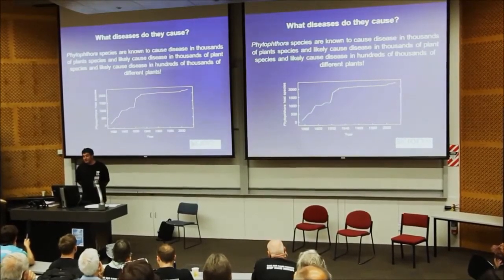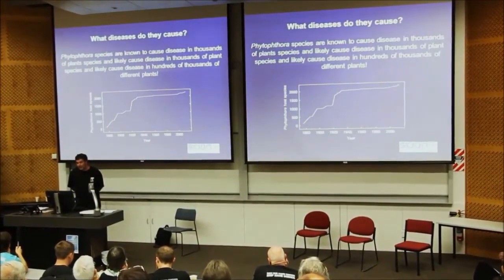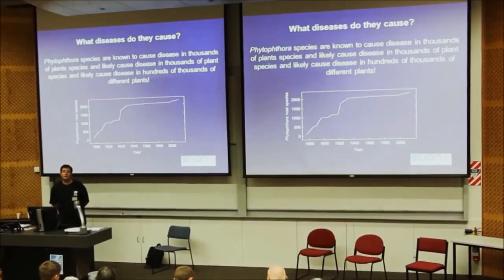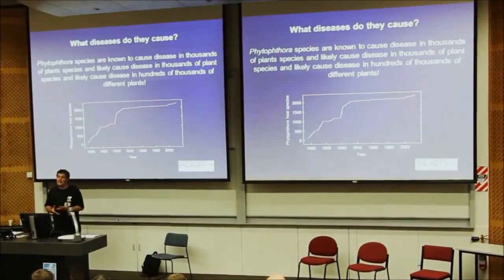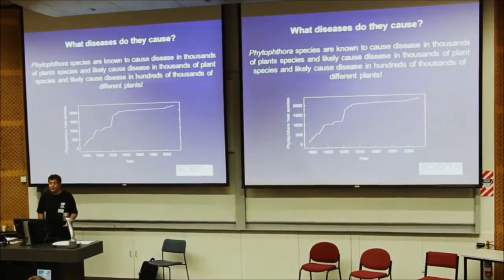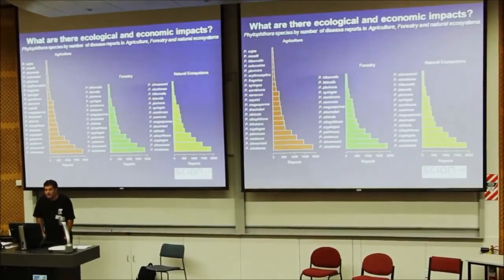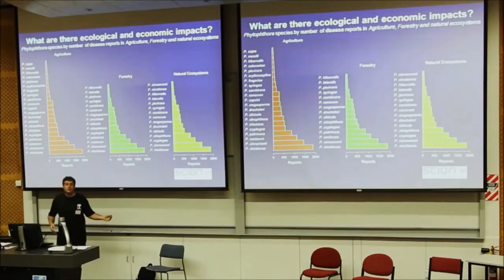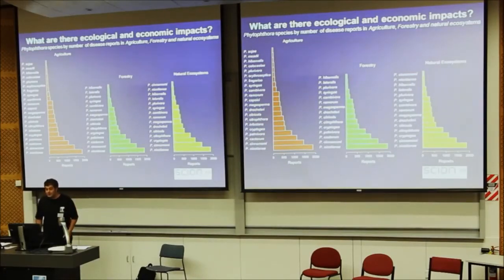Phytophthora species are known to cause diseases in thousands of plants. Phytophthora cinnamomi alone is known to kill about 40% of the plant species from the southwest of Western Australia. A lot of research is probably needed to work out exactly what different phytophthora species are doing within New Zealand and around the world. These things are decimating horticulture and agriculture — affecting many hundreds if not thousands of species. We know New Zealand probably has somewhere between 30 and 50 phytophthora species, and there may be many, many more.